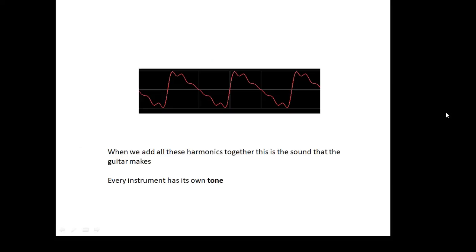When we pluck the string of a stringed instrument like a guitar, we actually get all of these harmonics happening together at the same time. So instead of getting a simple smooth sine wave, we get something more complicated — but hopefully it sounds quite nice. Each instrument has its own tone because we get a different mixture of harmonics when we pluck, bow, or otherwise play it. When we add all the harmonics together, that's the sound we actually get from the guitar.